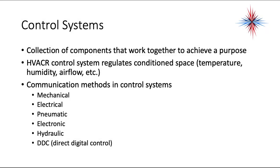A control system is a collection of components that work together to achieve a purpose. HVAC control systems regulate conditioned space temperature, humidity, airflow, and more. Communication methods in control systems can be mechanical, electrical, pneumatic (with air pressure), electronic, hydraulic (with fluids), and DDC for direct digital control. These are all various communication methods in control systems.